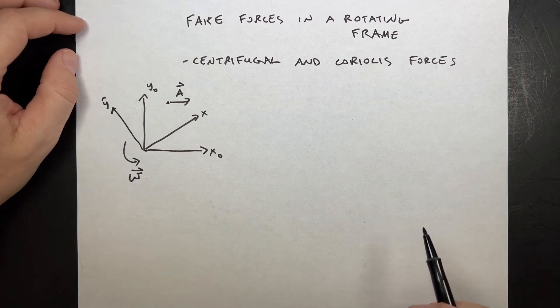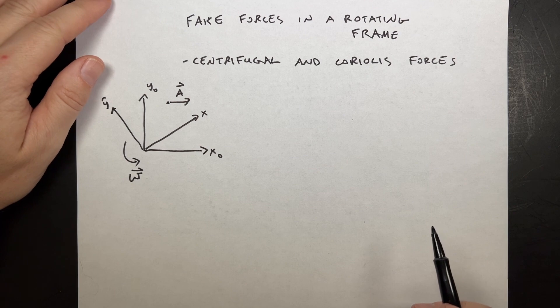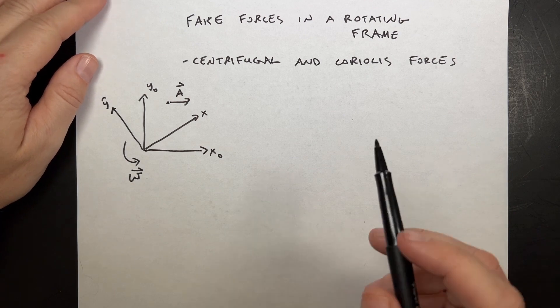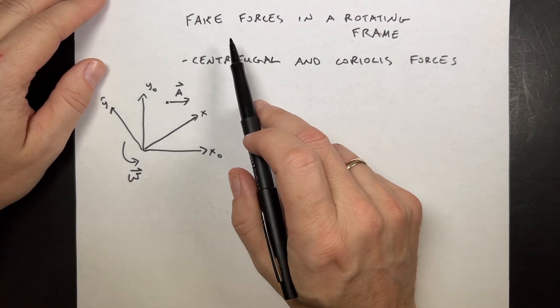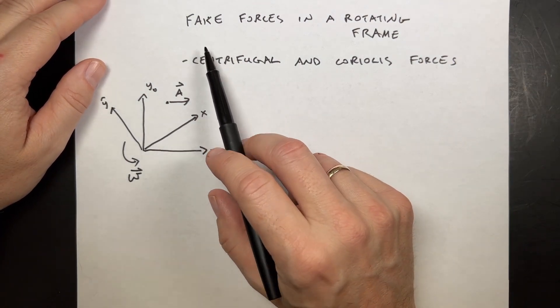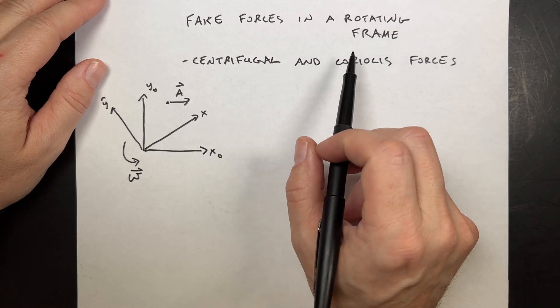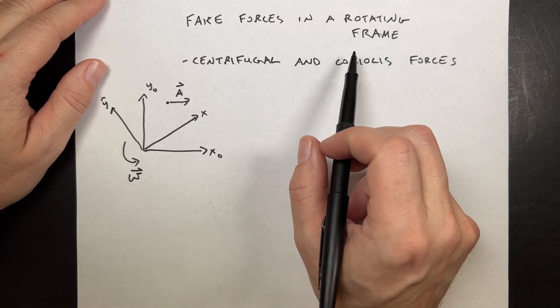I'm not really great at this, but I'm going to do it anyway because you've got to get better at stuff. So I want to talk about fake forces in a rotating reference frame.